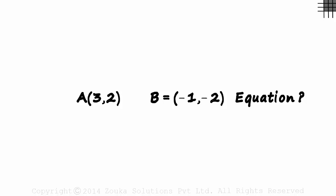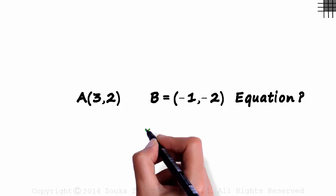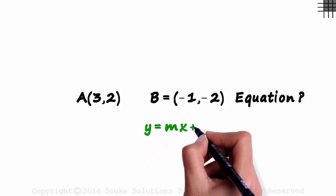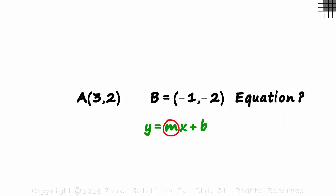In the previous session, we have seen the slope-intercept form Y is equal to MX plus B. M is the slope and B is the y-intercept. To find the equation of this line, let's try to find the slope first.